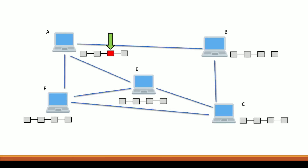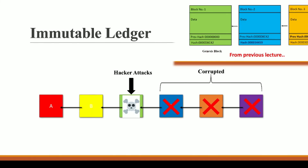Blockchain is a distributed immutable ledger. In the P2P network of blockchain — which we will discuss in an upcoming video — once a block gets affected, other nodes that hold the correct copy of the blockchain will detect the issue. They will correct these changes because they have the valid copy of the blockchain. This is why blockchain is immutable in nature.